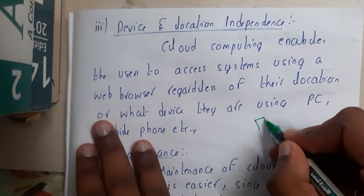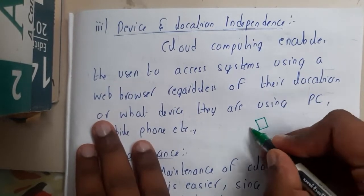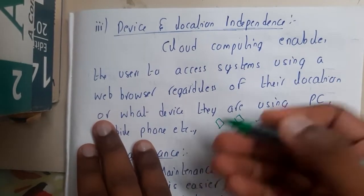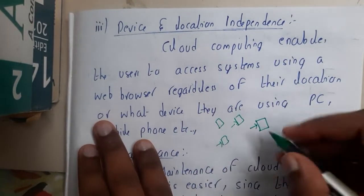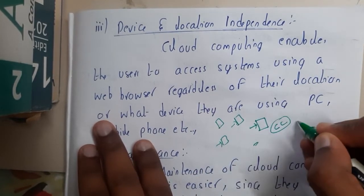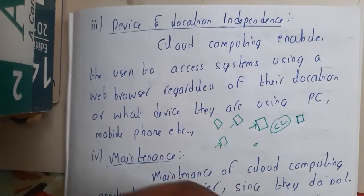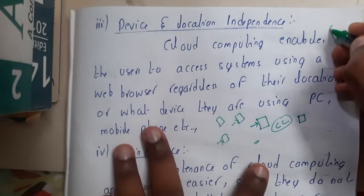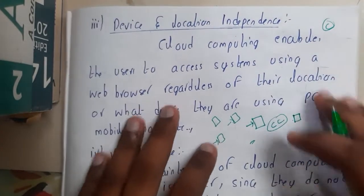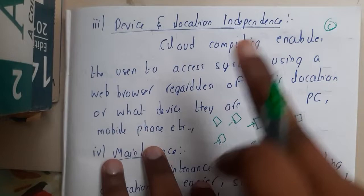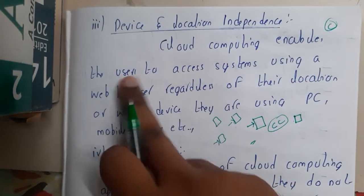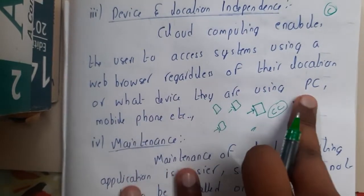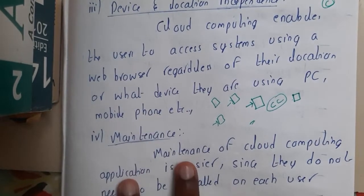Similarly, there is device and location independence. If you want to open some file, you can use your mobile phone, your PC, your laptop, your iPad, or any kind of device. Most cloud-providing websites are 100% optimized to run on any device. Location independence means you can access it from anywhere. Cloud computing enables the user to access the system using a web browser regardless of their location or what device they are using — be it PC, mobile, or iPad.